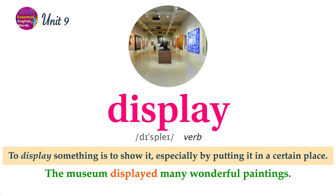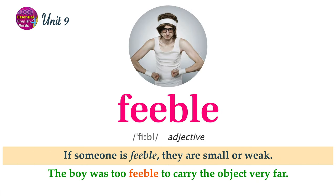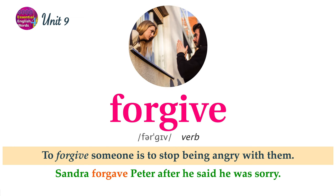To display something is to show it, especially by putting it in a certain place. The museum displayed many wonderful paintings. If something or someone is efficient, they do not waste energy. My car is very efficient. I rarely have to buy gas. If someone is feeble, they are small or weak. The boy was too feeble to carry the object very far. To forgive someone is to stop being angry with them. Sandra forgave Peter after he said he was sorry.